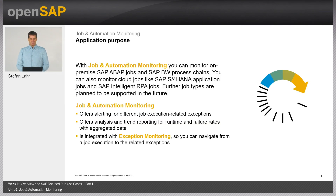With job and automation monitoring, you can monitor on-premise SAP ABAP jobs and SAP BW process chains. You can also monitor cloud jobs like SAP S/4HANA application jobs and SAP Intelligent RPA jobs. Further job types are planned to be supported in the future, like ABAP business workflow. SAP Java jobs and SAP PI BPM workflow executions are planned as well.